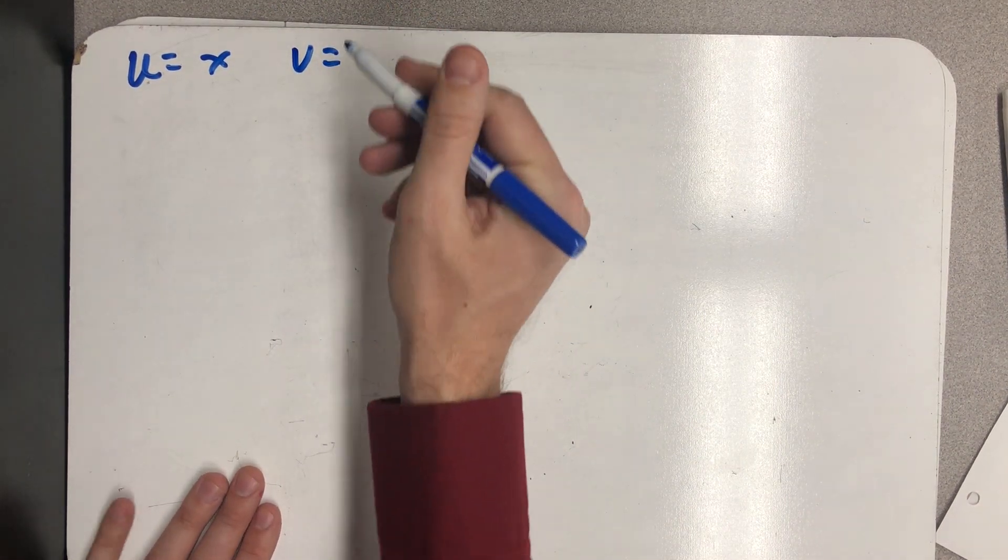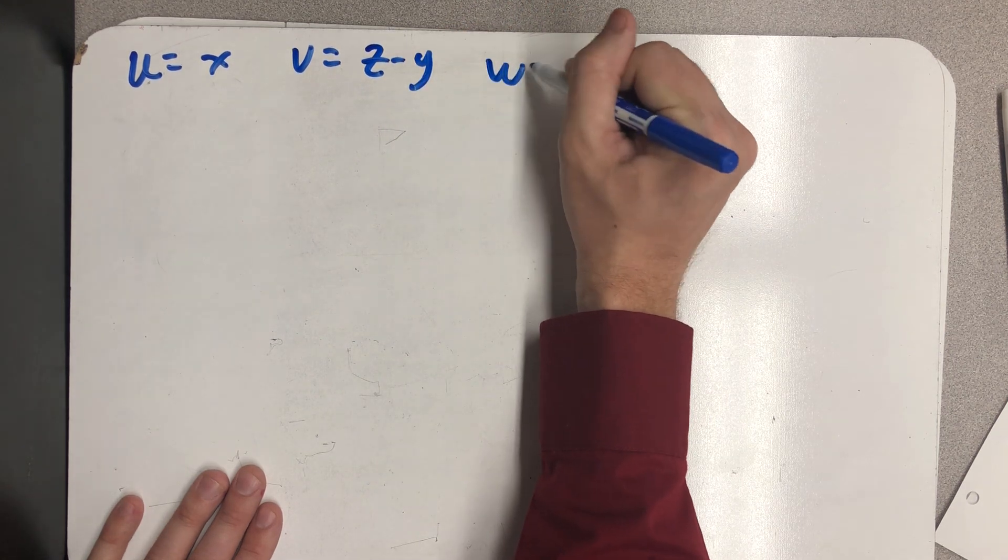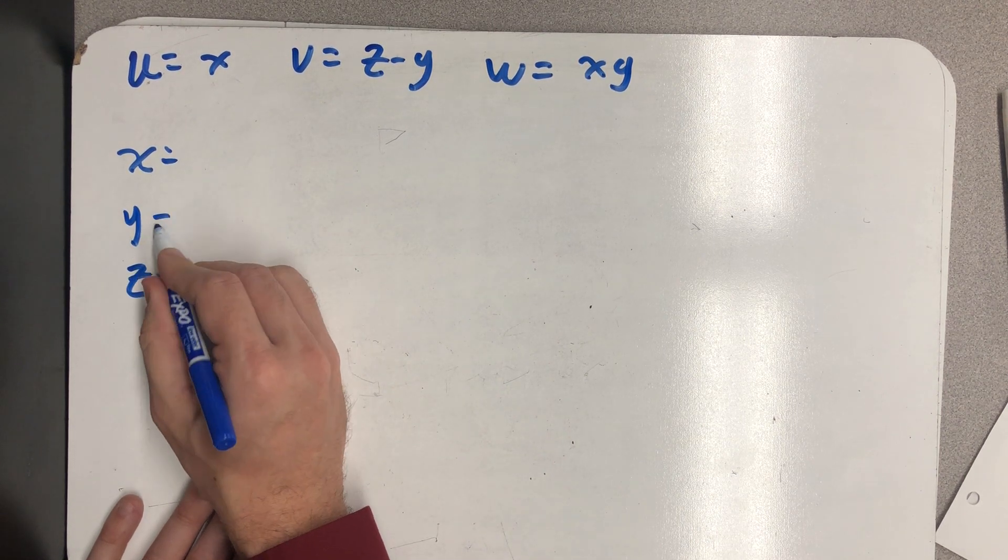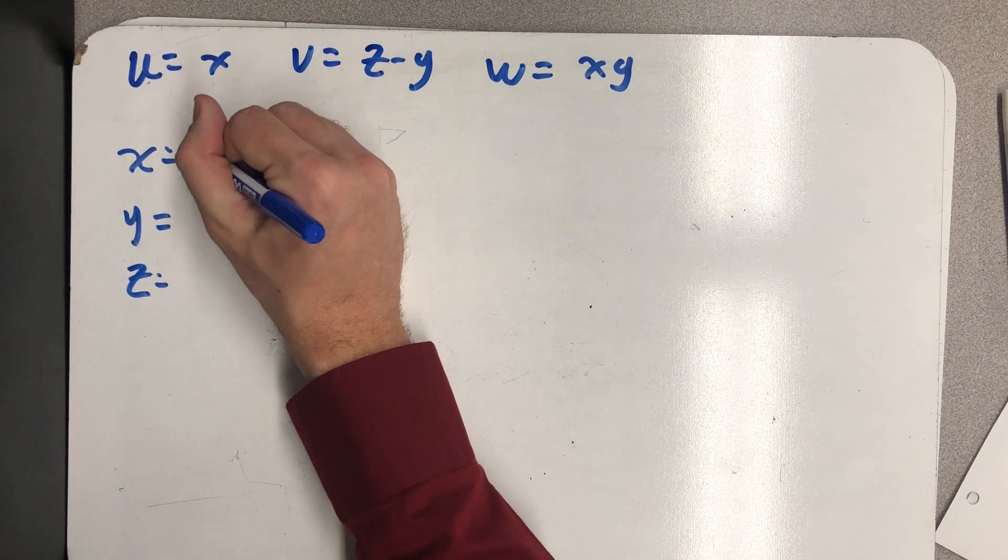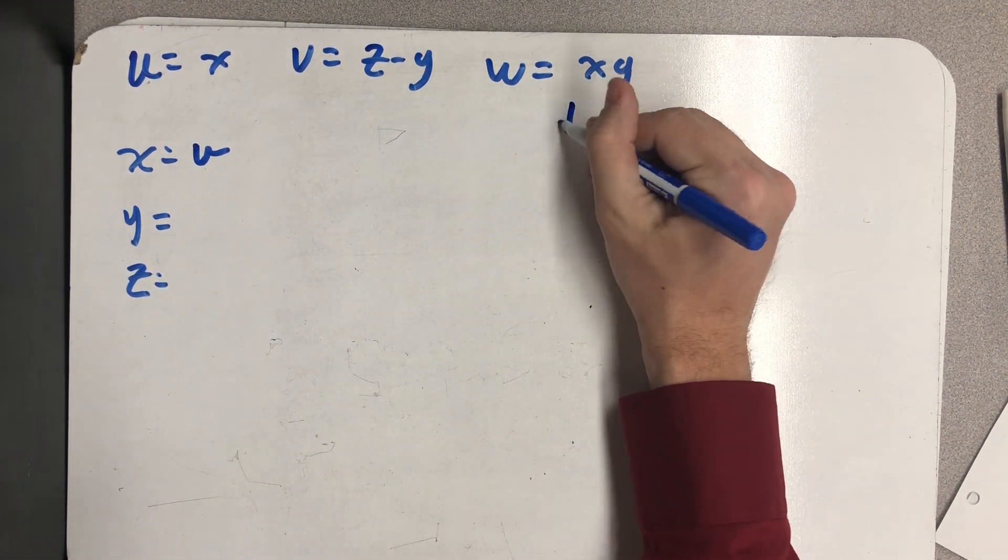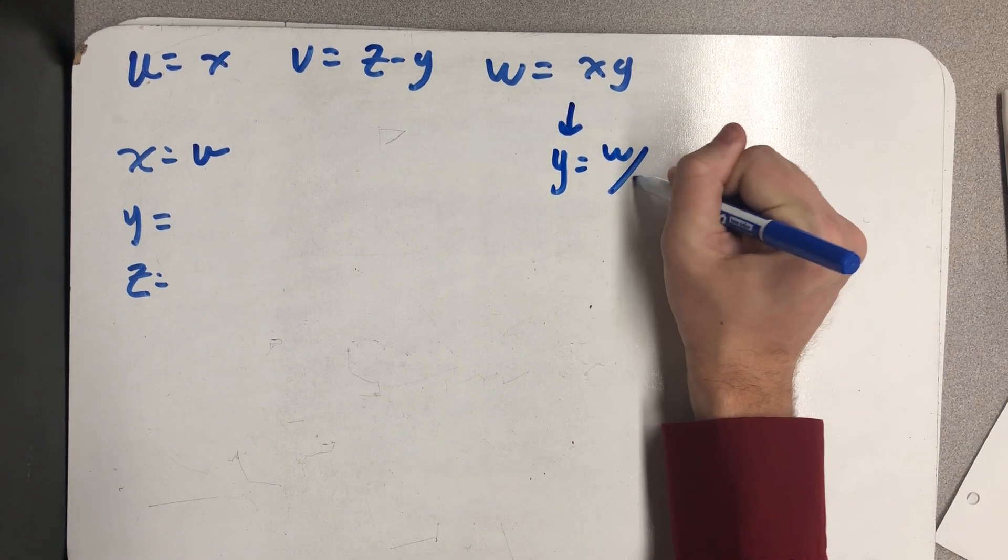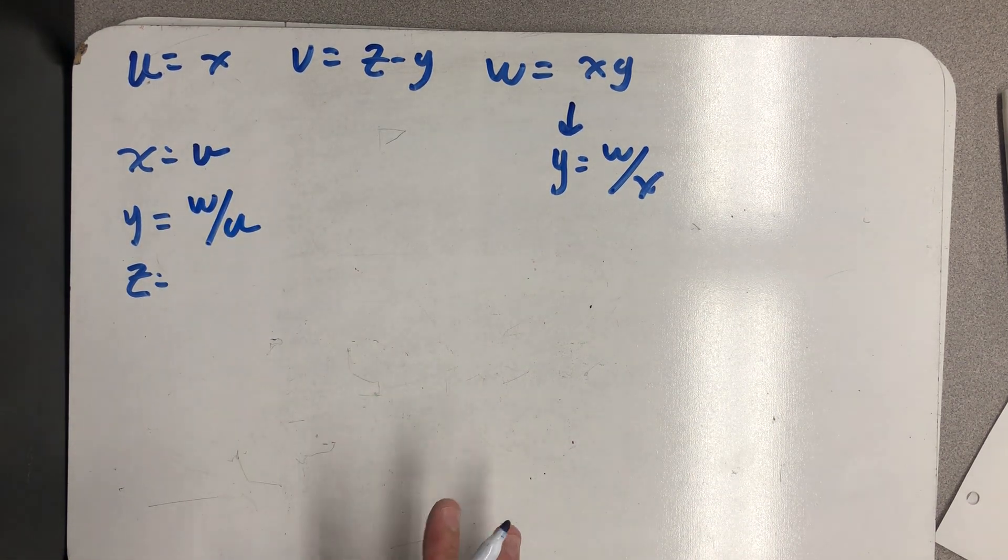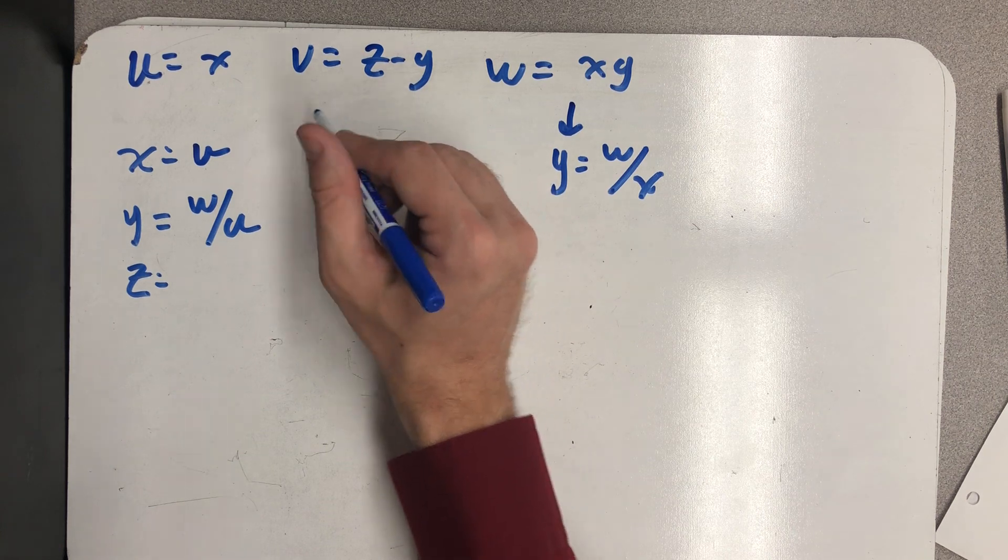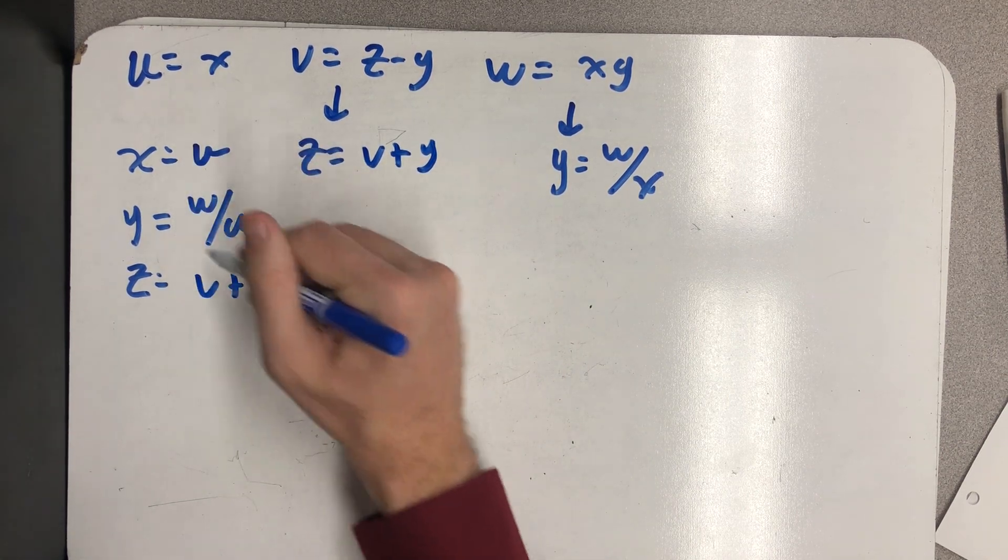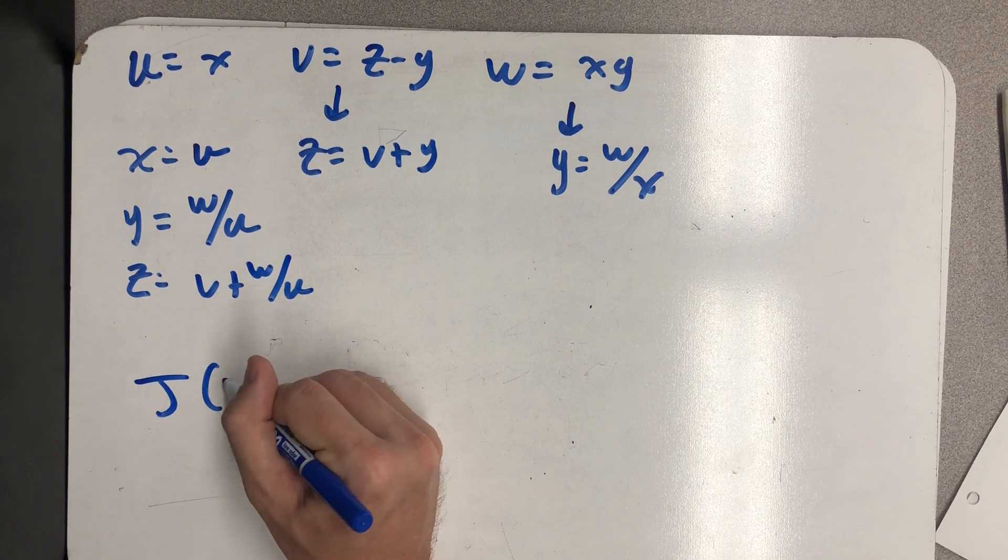So now I just need to compute the Jacobian. And so I need to think about my substitution: u equals x, v equals z minus y. And finally, w equals x, y. Because what I really need are equations, say x equals, y equals, and z equals, so that I can compute the Jacobian. All right, well, x equals u. And so that one's pretty nice. And in fact, those are going to be beautiful partials to take. I'm going to choose to solve this equation for y, because it tells me that y is equal to w over x. And x is equal to u. So I know that y is w over u. And again, not hard partials to deal with there. And then finally, this equation would tell me that z is v plus y. So that's v plus and y is w over u.